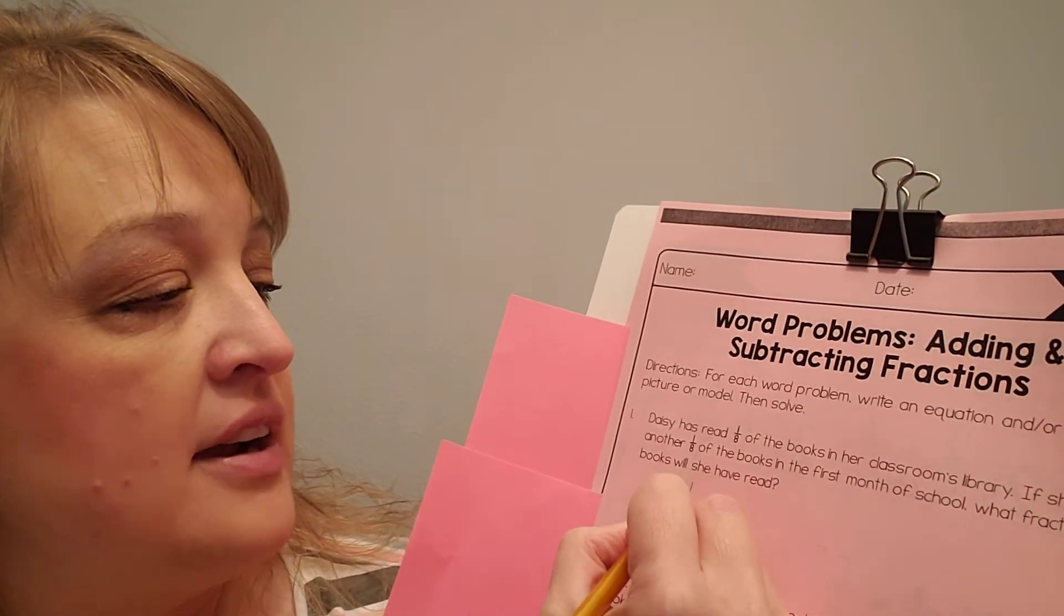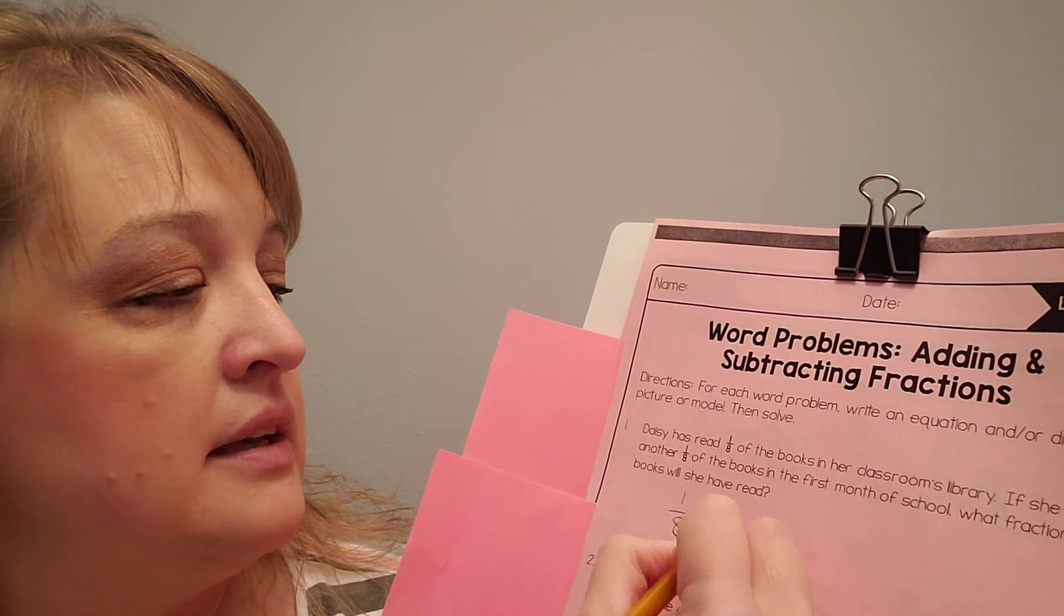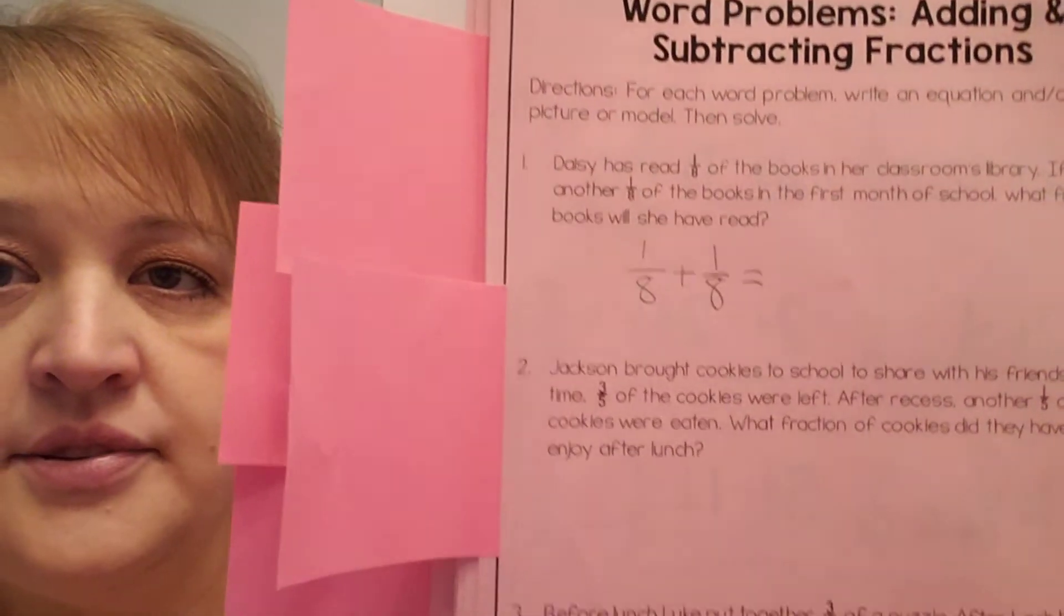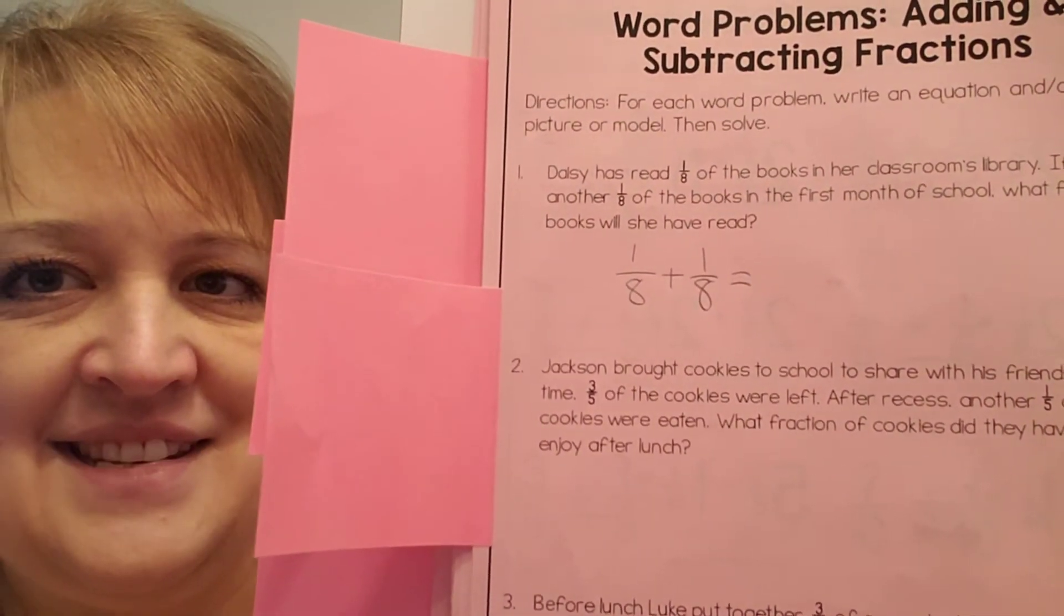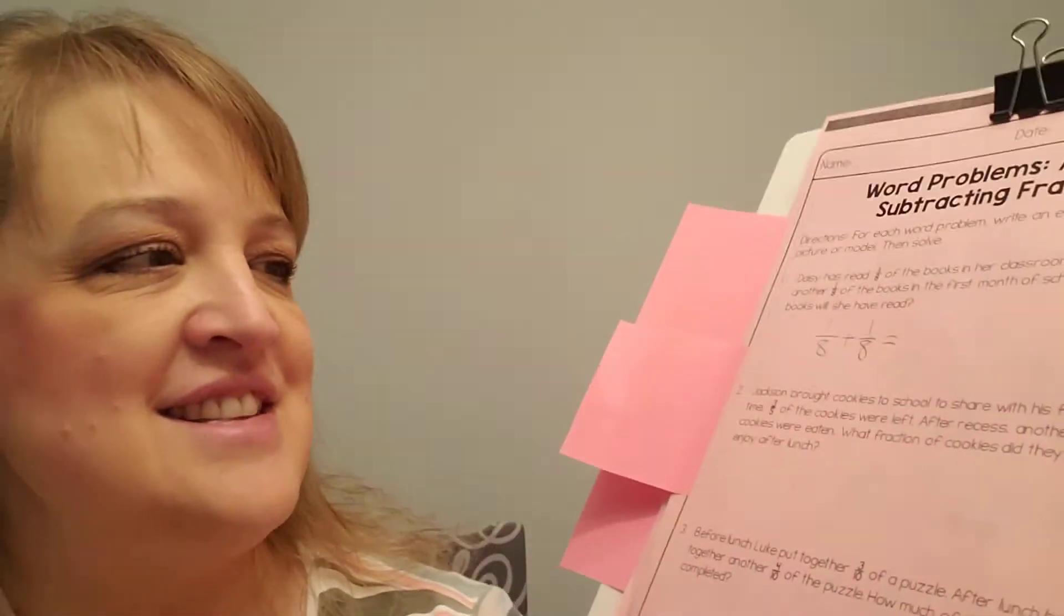All right. So number 1. Daisy has read 1 8th of the books in her classroom library. If she reads another 1 8th of the books in the first month of school, what fraction of books will she have read? So we're combining what she's read and what she's going to read. So my fraction problem is going to look like that. And you can do that. All right. Get your answer and label it.